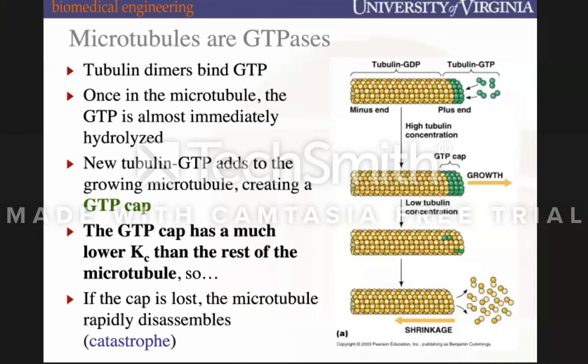The plus end and minus end are not the same thing. The plus end is typically tubulin with GTP and the minus end is typically GDP. The pre-lecture also discussed microtubule organizing centers — MTOCs — that bind at the minus end. Those centrosomes are typically present at the minus end of the tubulin filament, so there's actually something anchoring the minus end of the filament.